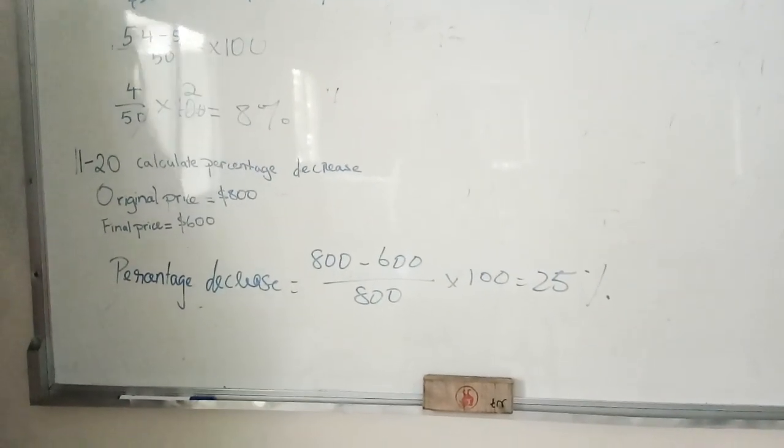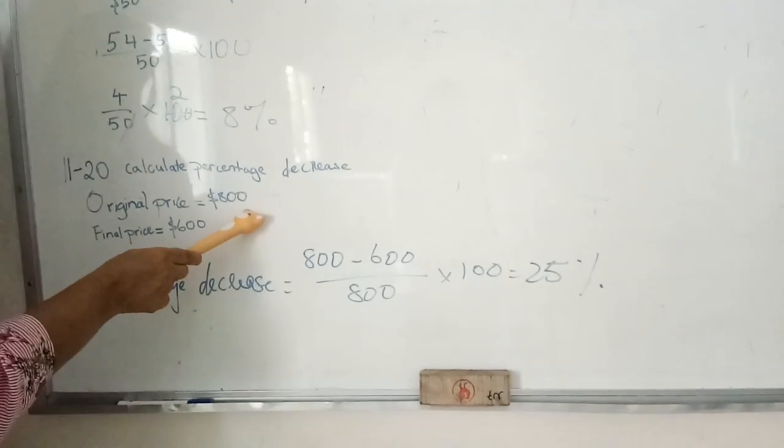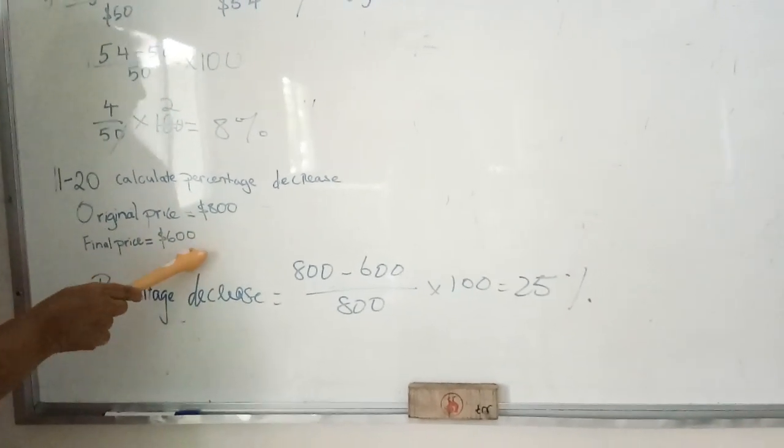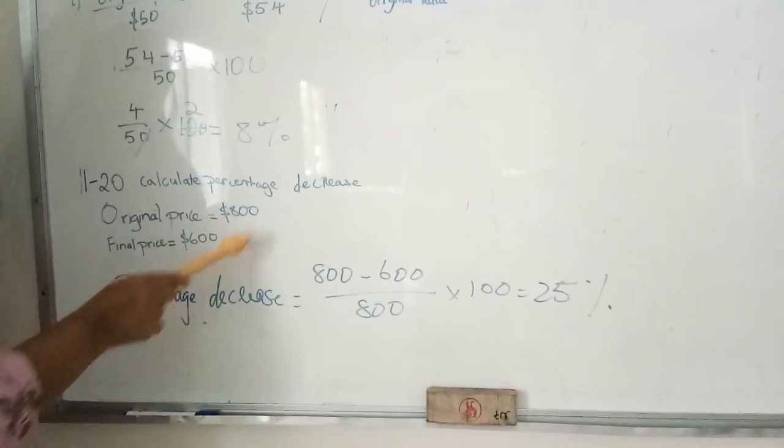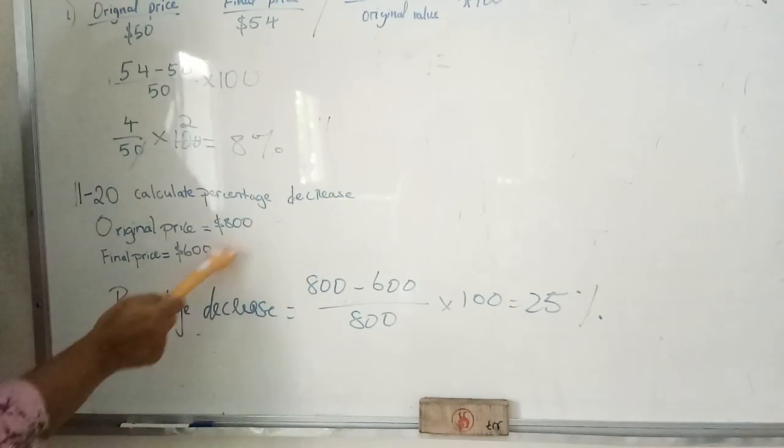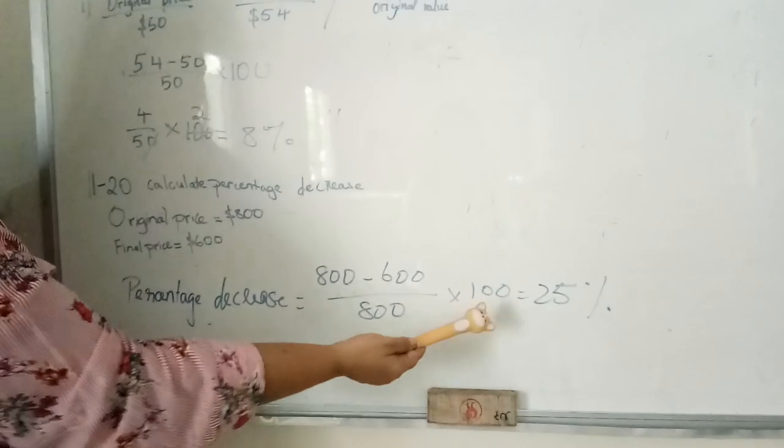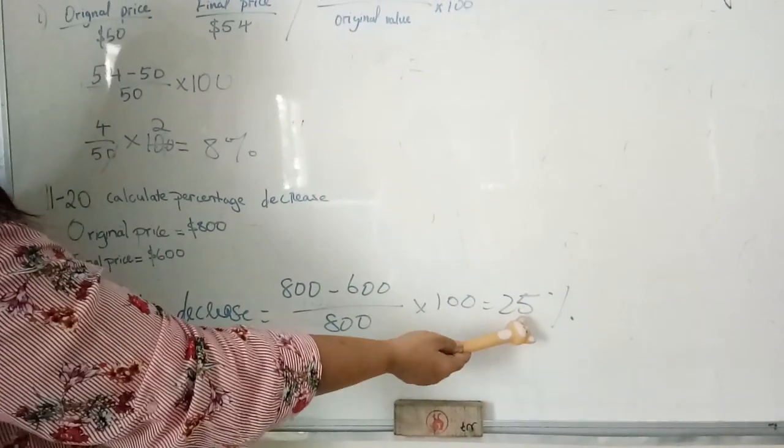Let us see one question here. The original price is 800 dollars, final price is 600 dollars, meaning the price has come down. Percentage decrease will be 800 minus 600, which is 200, divided by 800 times 100. The percentage decrease is 25%.